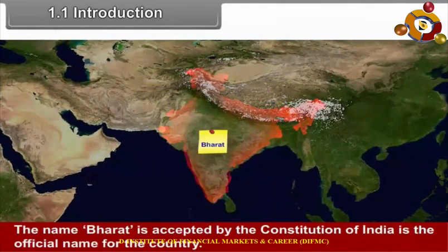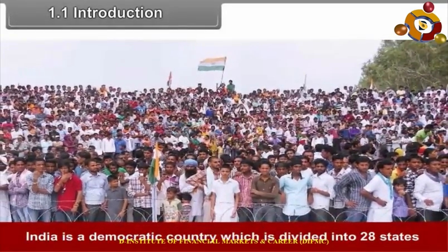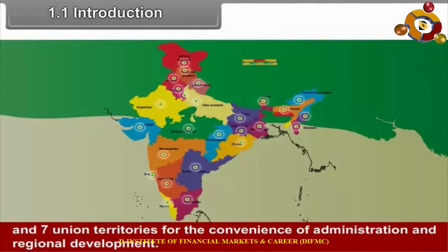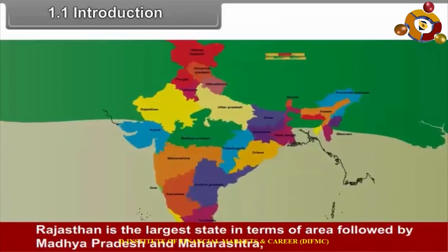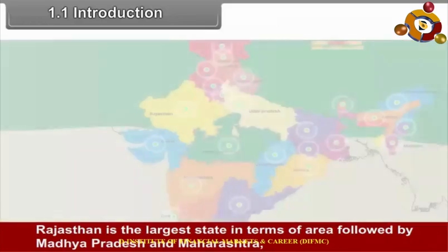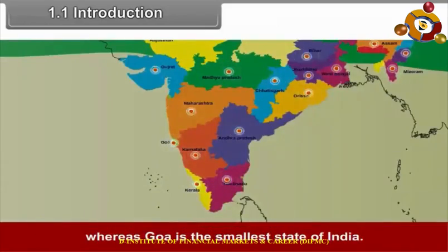The name Bharat is accepted by the Constitution of India as the official name for the country. India is a democratic country which is divided into 28 states and 7 union territories for the convenience of administration and regional development. Rajasthan is the largest state in terms of area, followed by Madhya Pradesh and Maharashtra, whereas Goa is the smallest state of India.